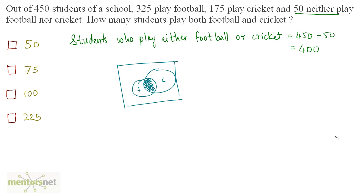Here is the Venn diagram — some people play football, some play cricket, and some play both, marked by the red shaded area. The students who play either football or cricket make up this complete area encircled by the red lines. When you add football and cricket you count the red shaded area twice, and when you subtract the whole area you only subtract the shaded area once, so only the shaded area remains.